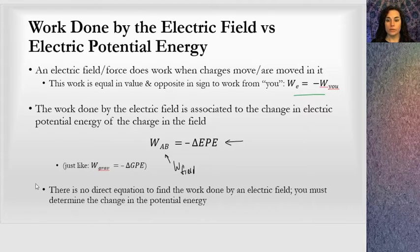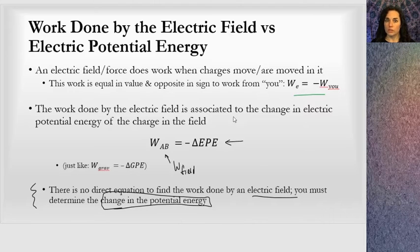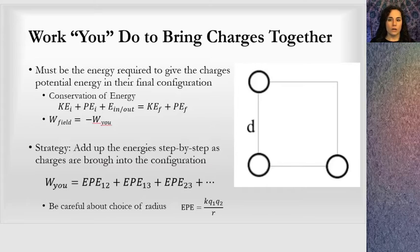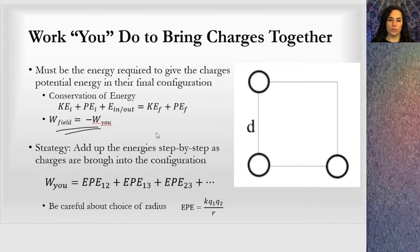There is no direct equation to find the work done by an electric field — you must determine the change in potential energy. If they ask for the work done by the electric field, think electric potential energy. The work done by you to bring charges together is the positive change in electric potential energy, since W_field = -W_you.